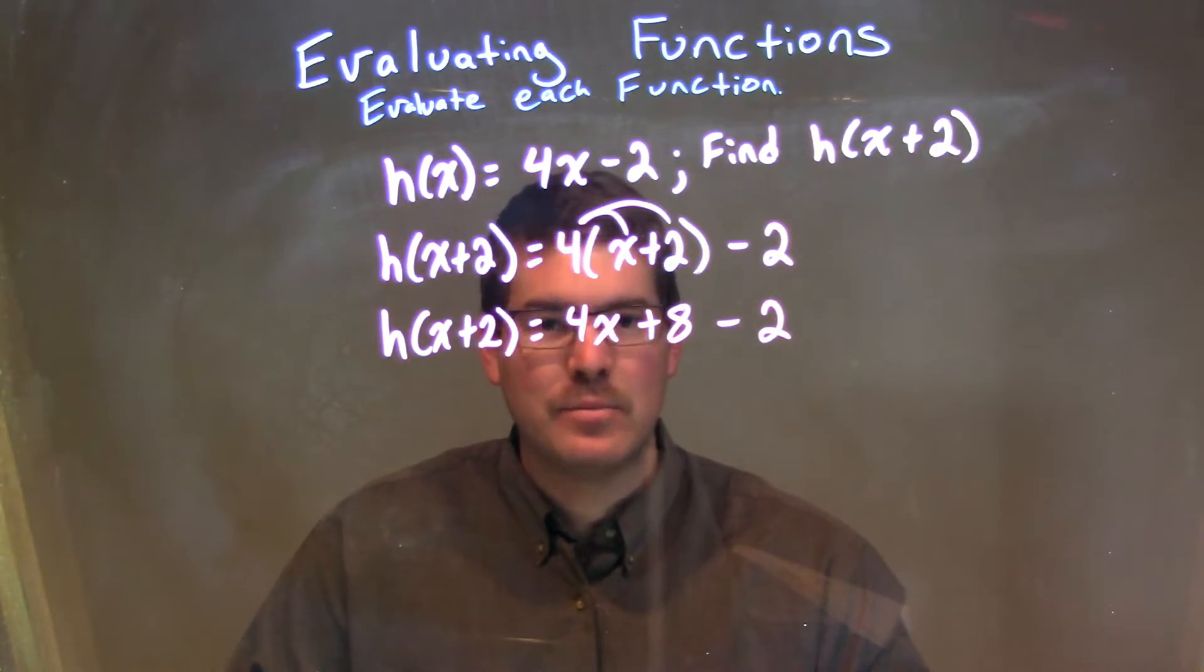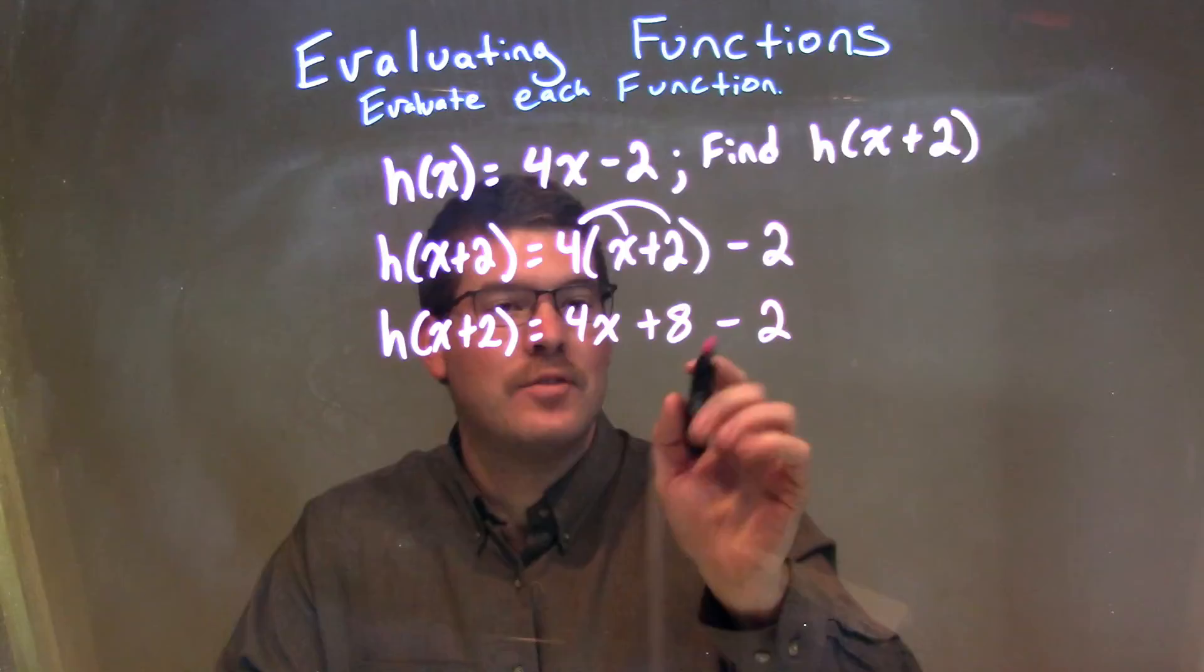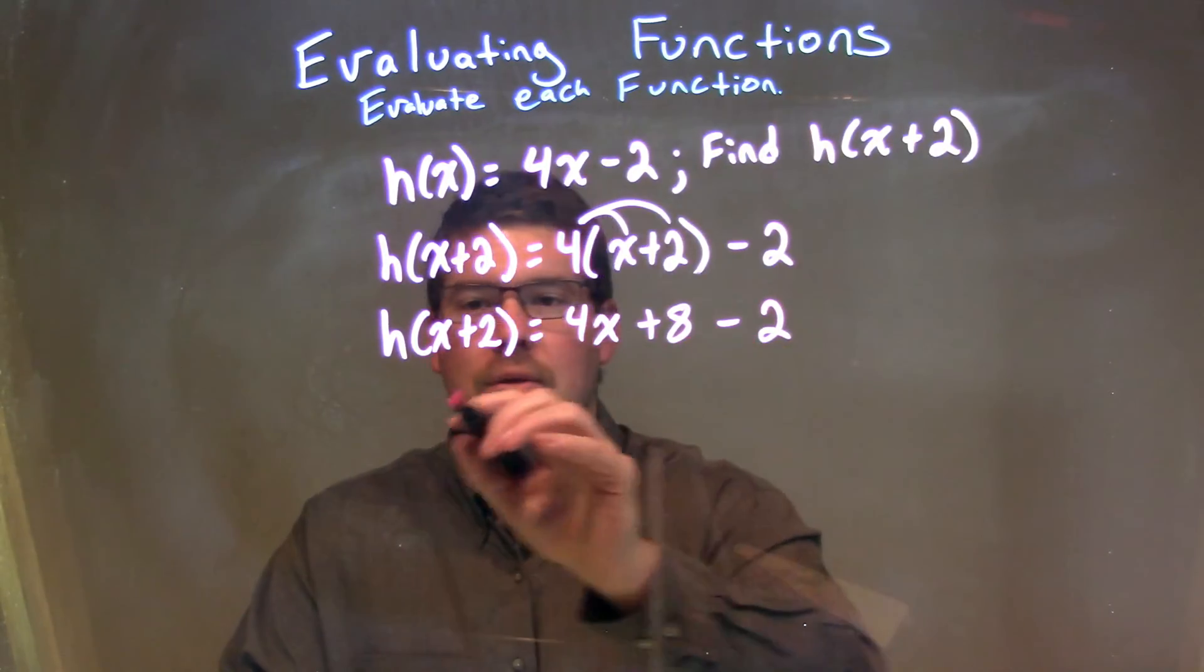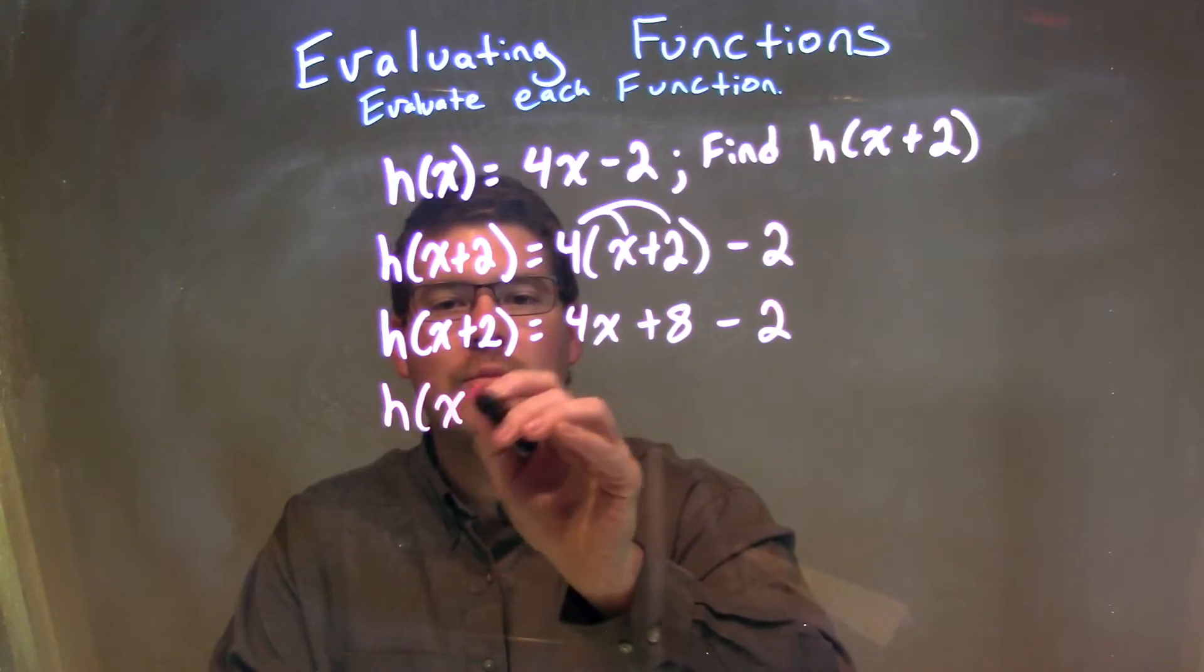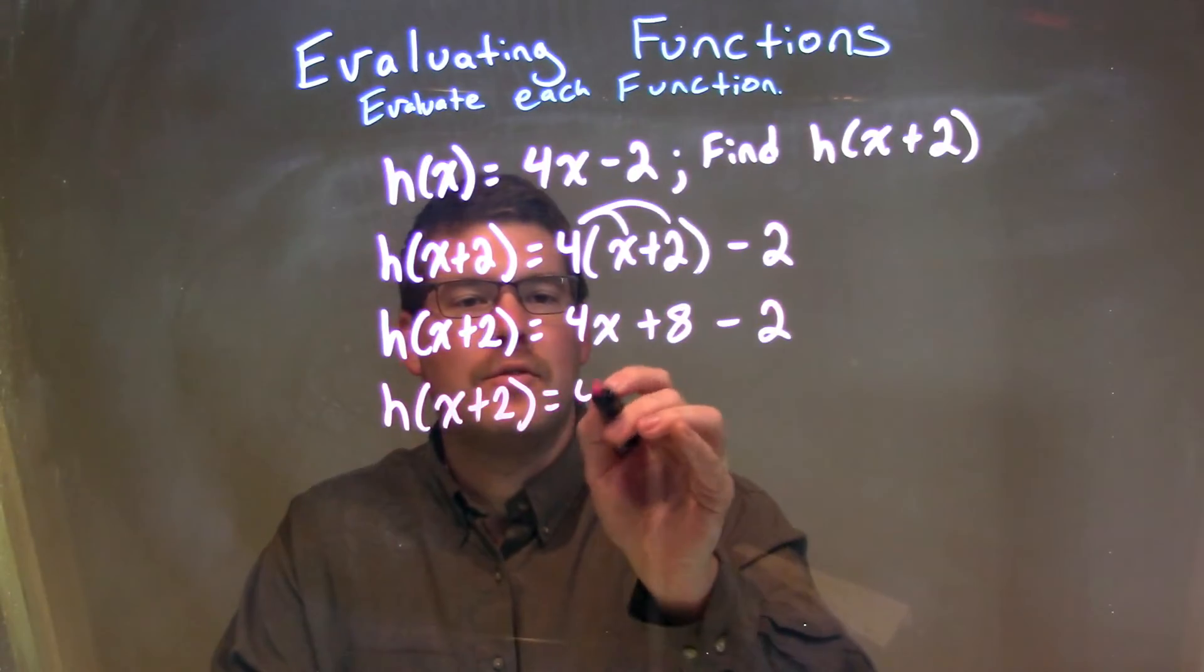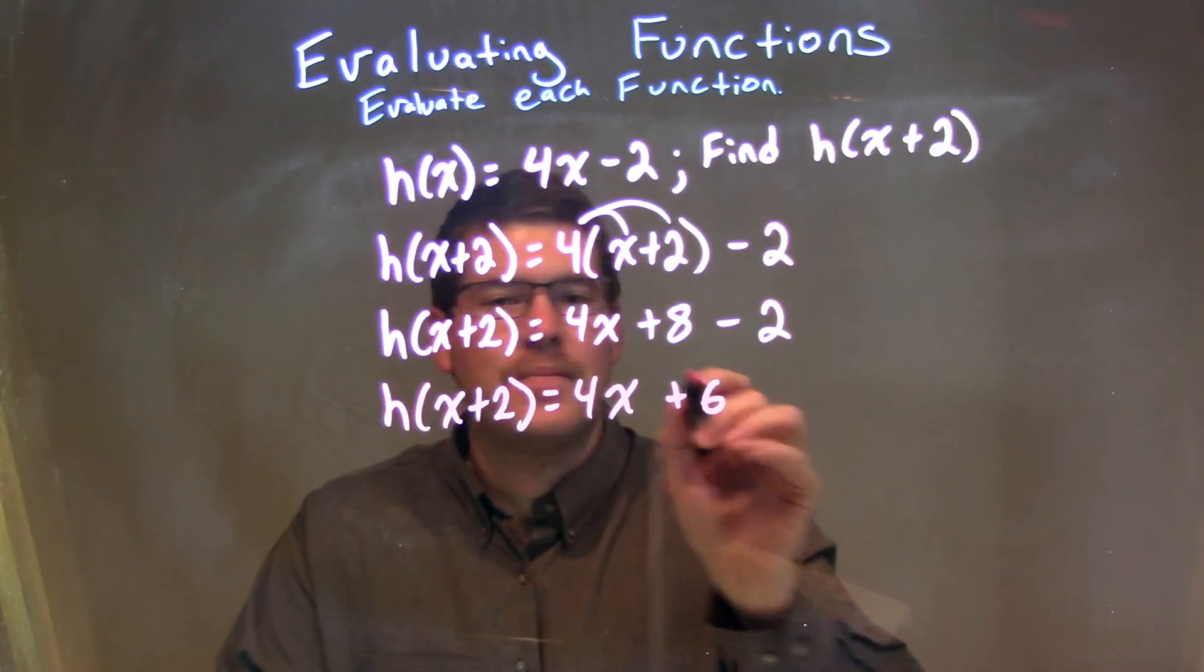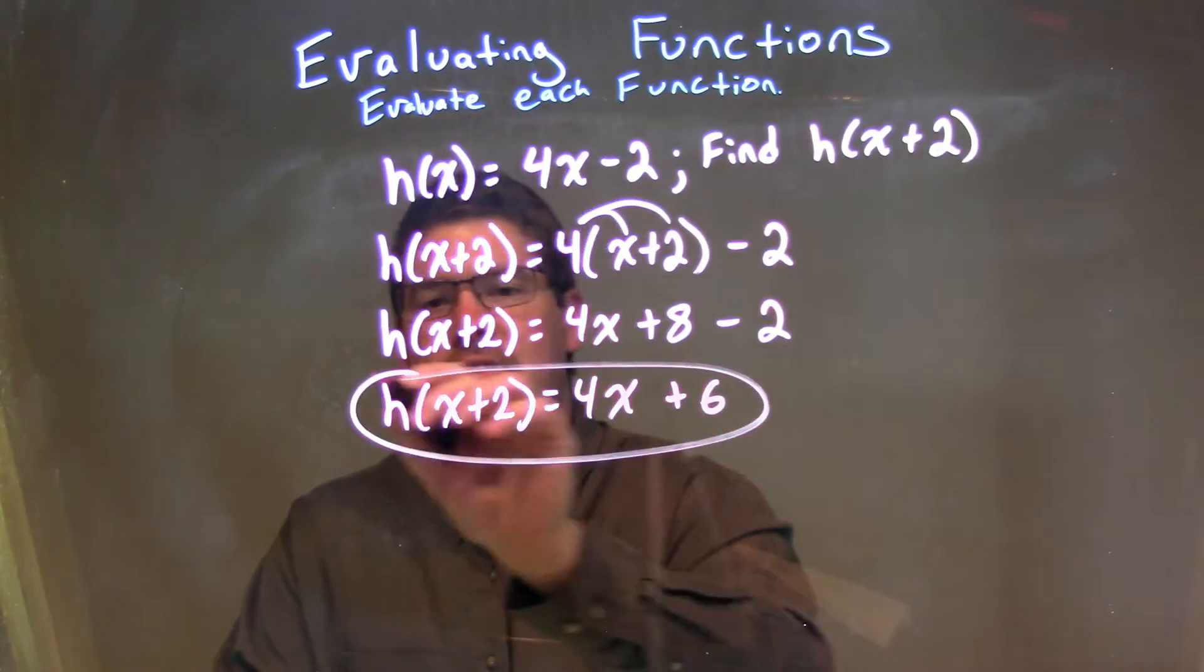So, now it's time to simplify a little more, one last little step. 4x can't combine with anything, but the 8 minus 2 can. So, we have h of x plus 2 here is equal to 4x. Now, 8 minus 2 is a 6, so we have plus 6, and that is our final answer.